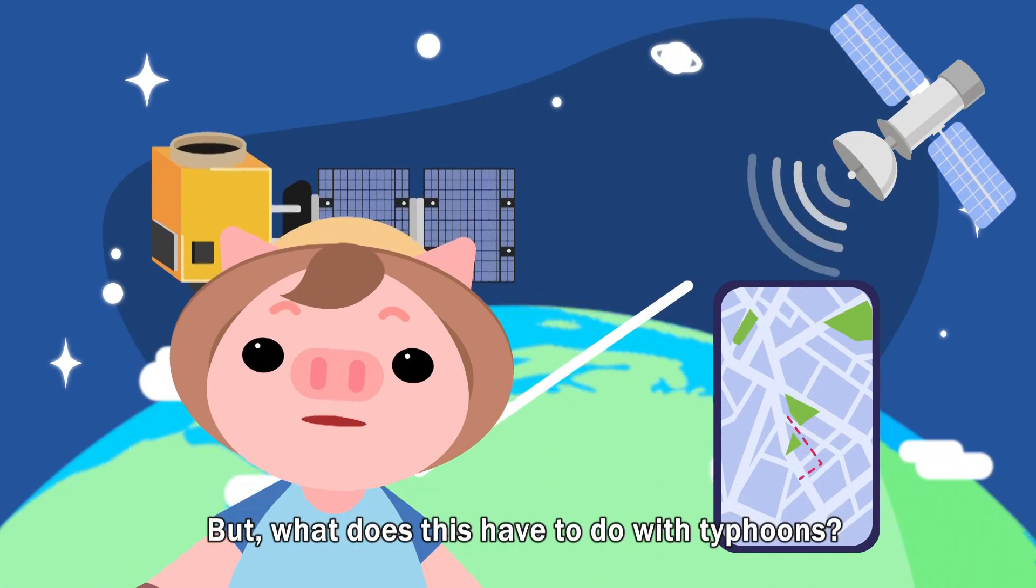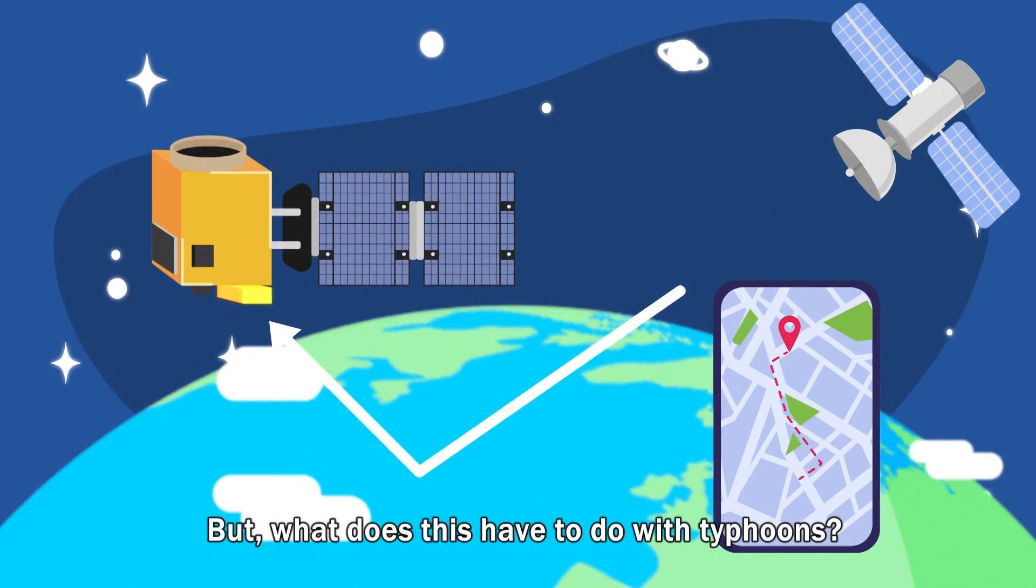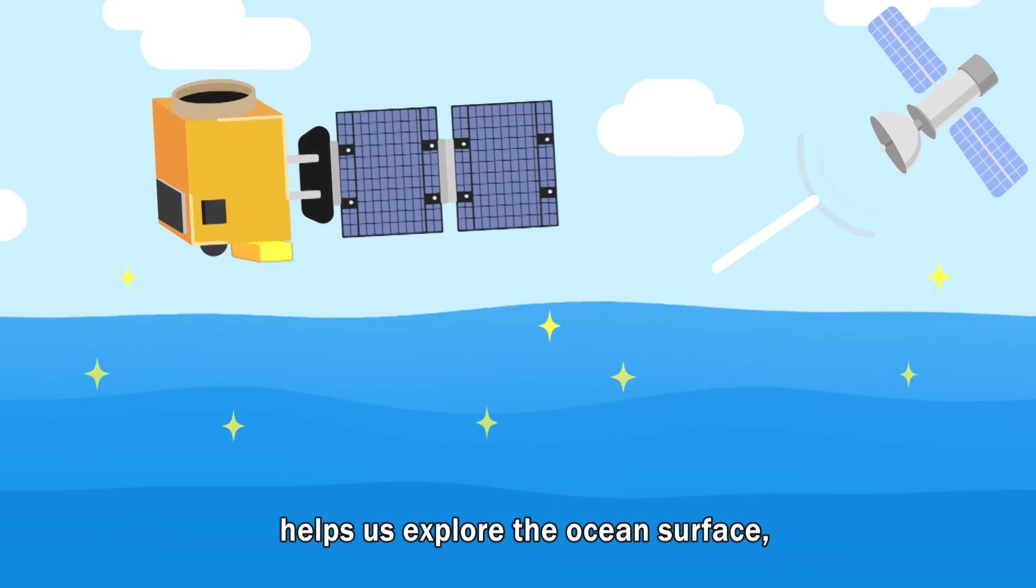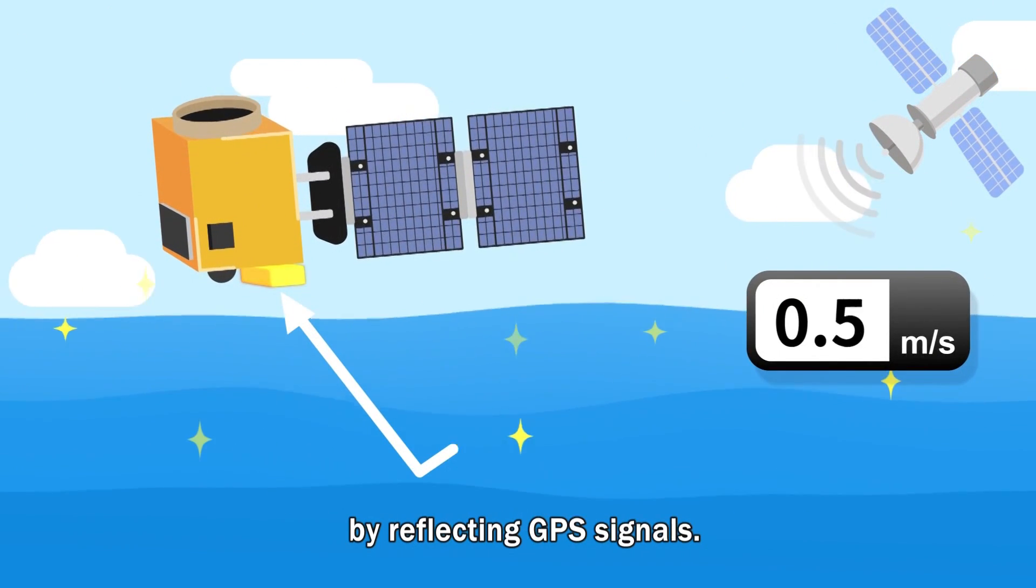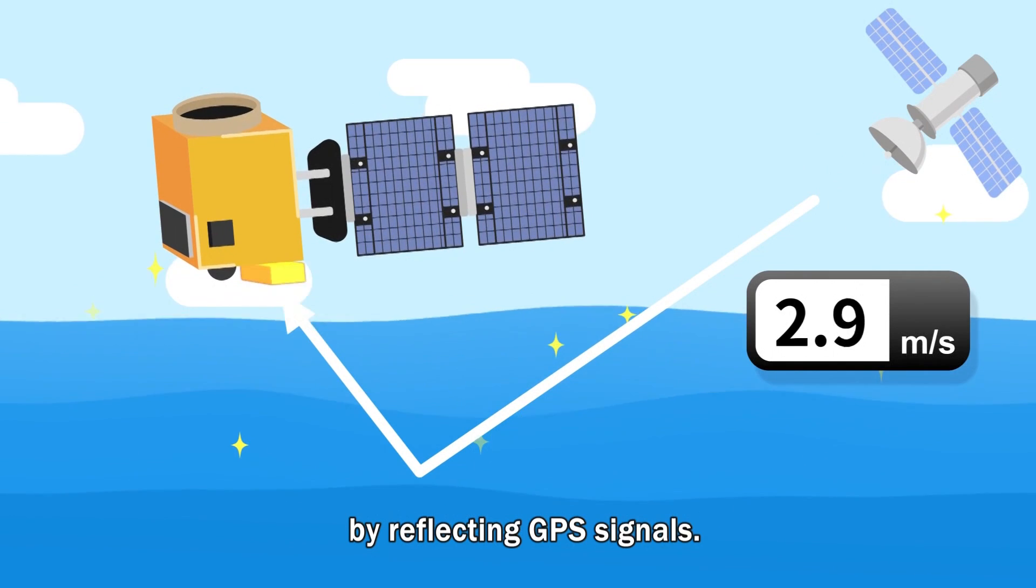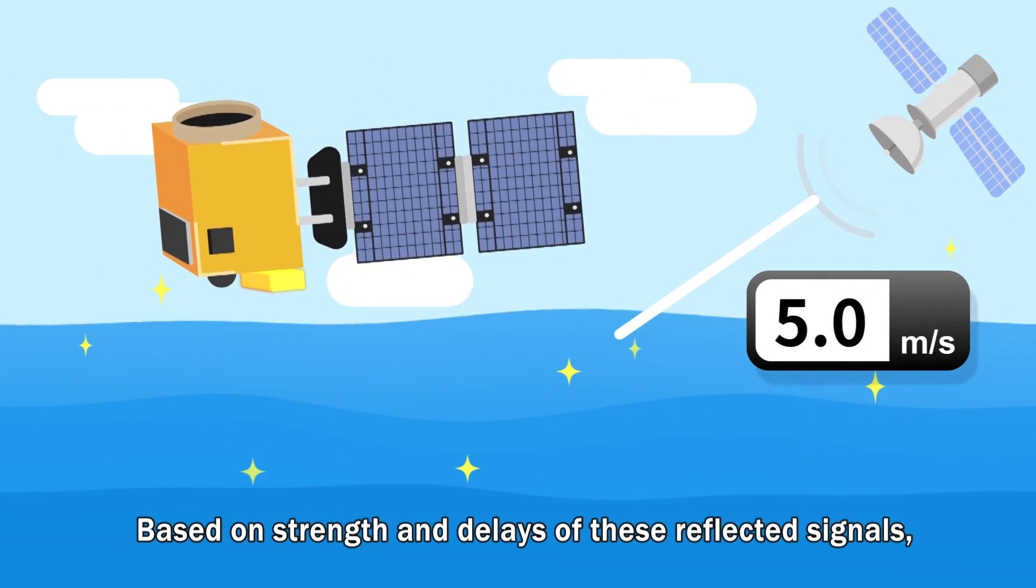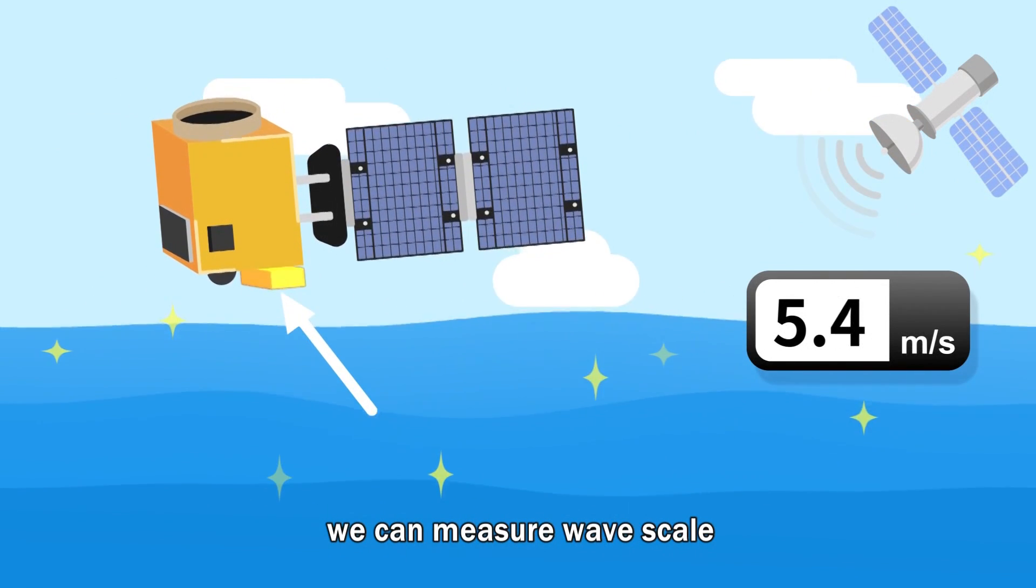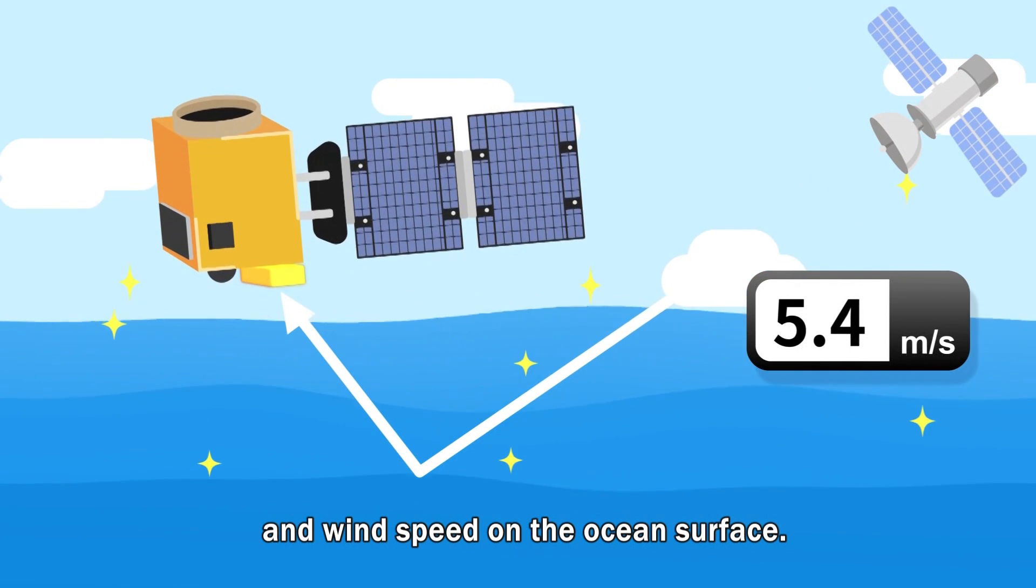But what does this have to do with typhoons? Triton's golden lunchbox helps us explore the ocean's surface by reflecting GPS signals. Based on strength and delay of these reflective signals, we can measure wave scale and wind speed on the ocean's surface.